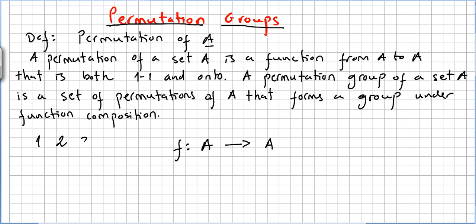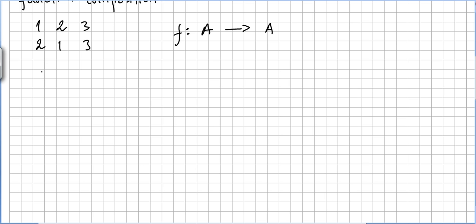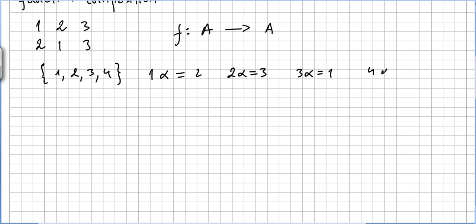For instance, the elements 1, 2, 3 with arrangement 2, 1, 3 is a permutation of those three numbers. If we have a set {1, 2, 3, 4} with four elements, we can define a permutation alpha where 1 goes to 2, 2 goes to 3, 3 goes to 1, and 4 goes to 4.